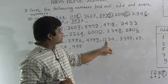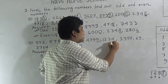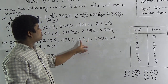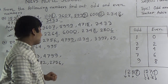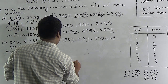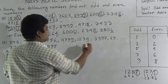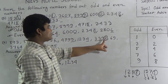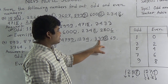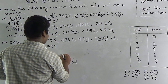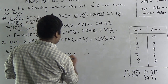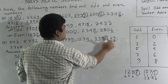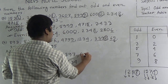Our next number is one thousand two hundred thirty-four. The ones place digit is four, which is an even number. So one thousand two hundred thirty-four is even, and it is written in the even number section. Our next number is three thousand three hundred ninety-seven. The ones place digit is seven, which is odd. So three thousand three hundred ninety-seven is odd. Next, sixty-nine: the ones place digit is nine, which is odd. So sixty-nine is odd, and it is written in the odd number section.